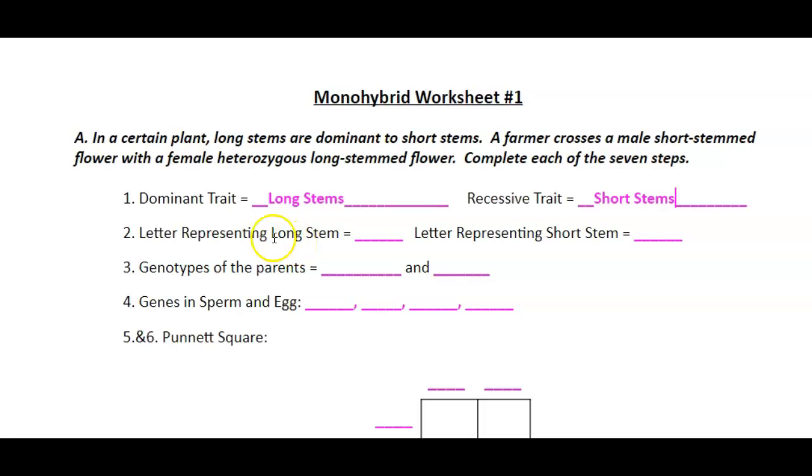Now we need to choose a letter to represent long stem and a letter to represent short stem. A lot of times we pick the letter that goes with the dominant trait. So I'm going to pick capital L. And remember we always use the same letter, we just use capital and lowercase. So in this case we would use lowercase L.